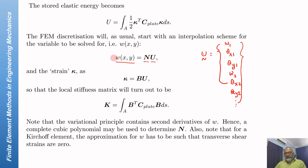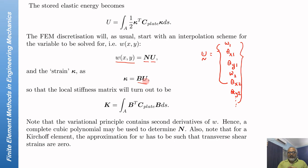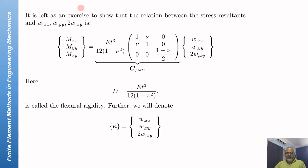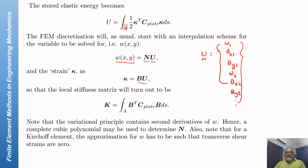I will express the field variable at any point inside the element using interpolation functions from the nodal displacements. The curvature vector Kappa will be expressed as B times U, where B is the strain-displacement matrix. The local stiffness matrix is then B transpose times C_plate times B, using a moment-curvature relationship rather than a stress-strain relationship.